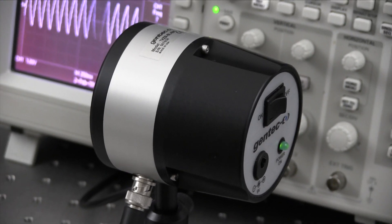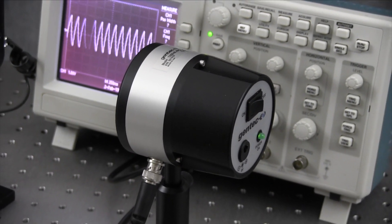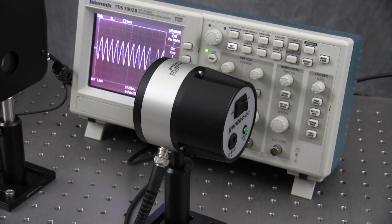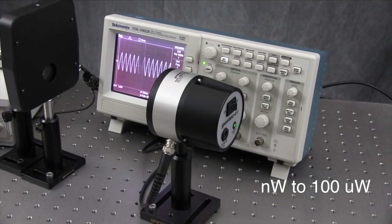What is a Terahertz 5i BLBNC? It's a very sensitive broadband analog radiometer for IR and Terahertz power measurements from nanowatts to 100 microwatts.